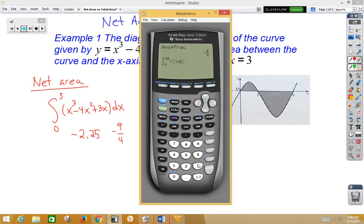0 to 3. And we want x cubed minus 4x squared plus 3x dx. And then if we hit enter, we get negative 2.25. Same answer. If we want it as a fraction, math 1, enter, and we get negative 9 fourths.